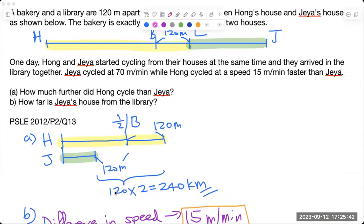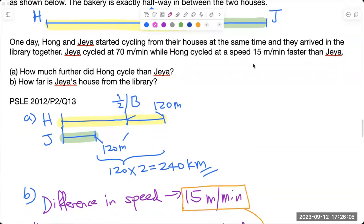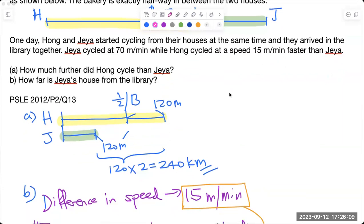For the fact that Hong has to catch up with Jaya, because Jaya is traveling a shorter distance, Hong is traveling a longer distance. So that means Hong's speed must be faster.